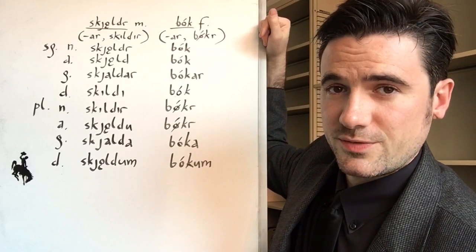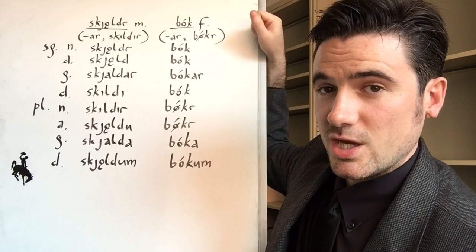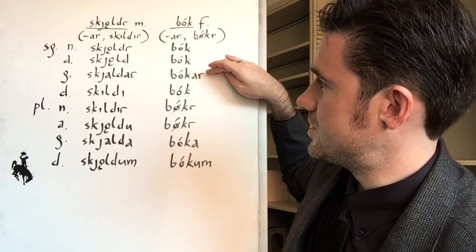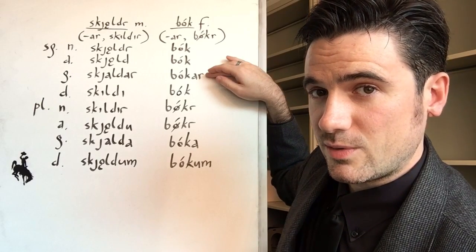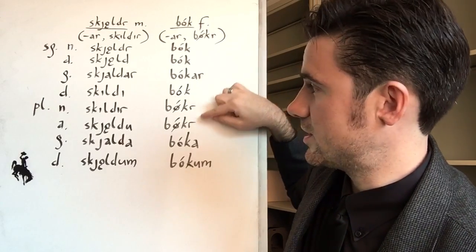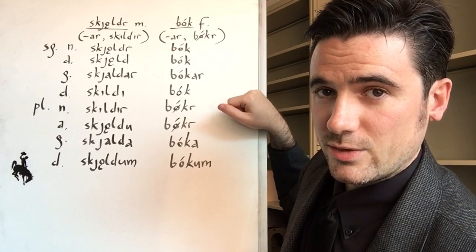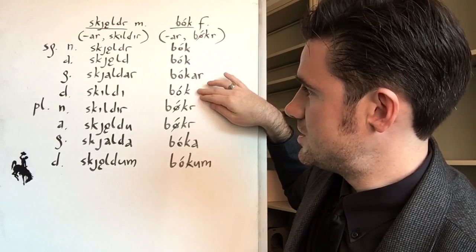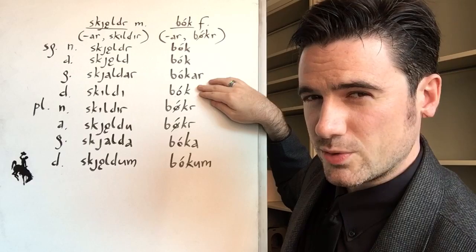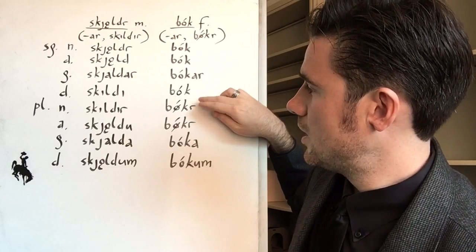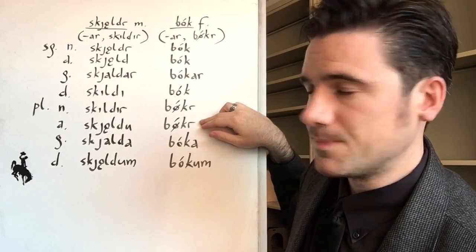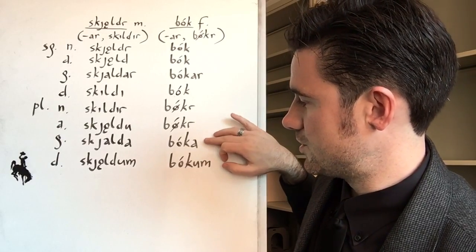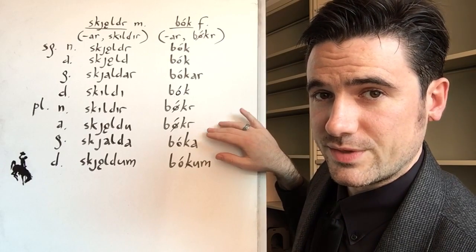BÓK is a feminine consonant stem. This is going to work like NÓT NIGHT. So we have BÓK, BÓK, genitive singular BÓKAR. Also in archaic writers, you might see BÓKR looking like the nominative and accusative plural with the I umlaut root vowel and then just an R at the end, but that's not common. Dative singular, typically just see BÓK. I don't think I've ever seen BÓKU like you sometimes see NÓTU. BŒKR, BŒKR, nominative and accusative plural. We have I umlaut and then the ending R and then our typical genitive plural and dative plural endings, A, UM, with no umlaut of any kind.